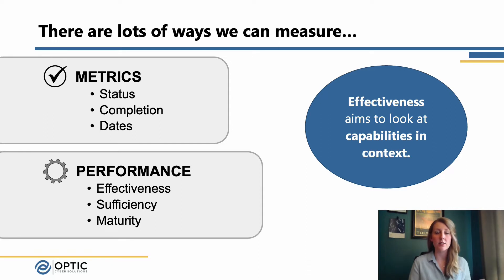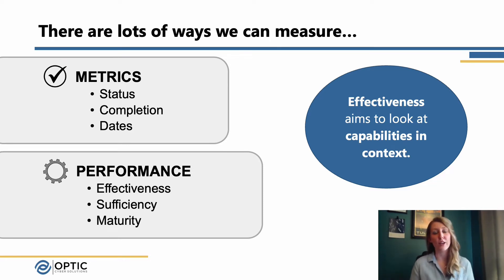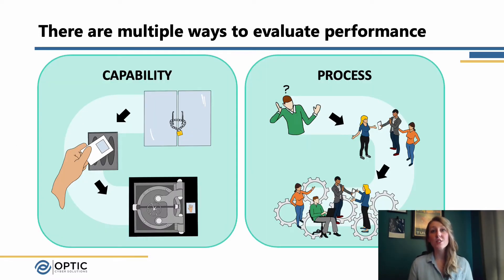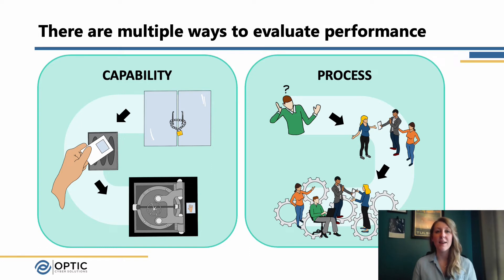A lot of times metrics are a great place to start, and as we get more mature and grow in our processes, we can get more into performance and those KPIs to get a better understanding of whether the capabilities we're putting in place — whether they be controls, subcategories, practices, whatever we want to call them — are really being effective for our organization and helping us meet those business needs.